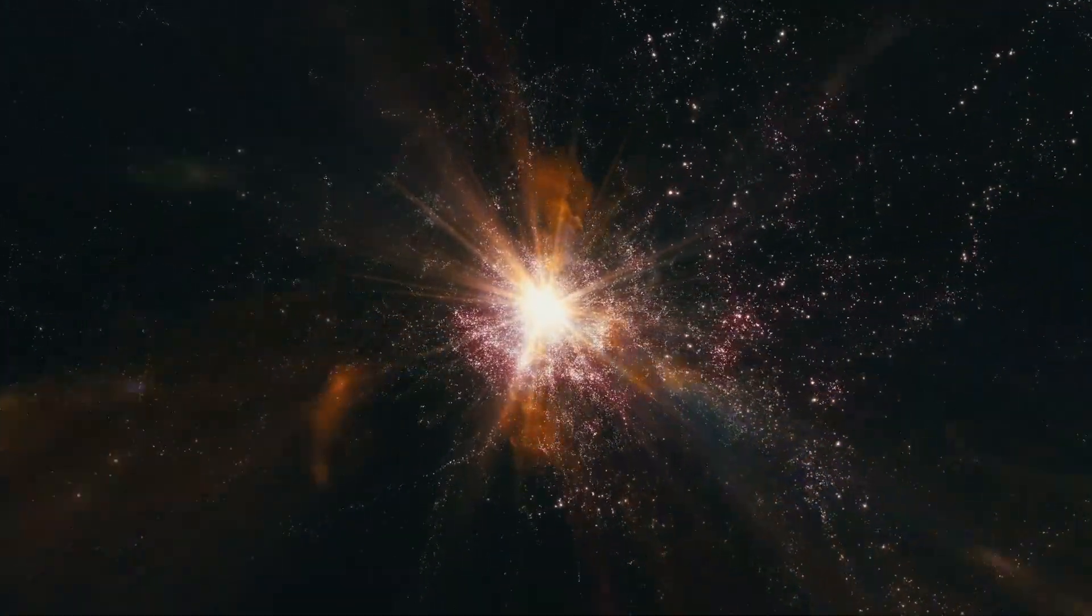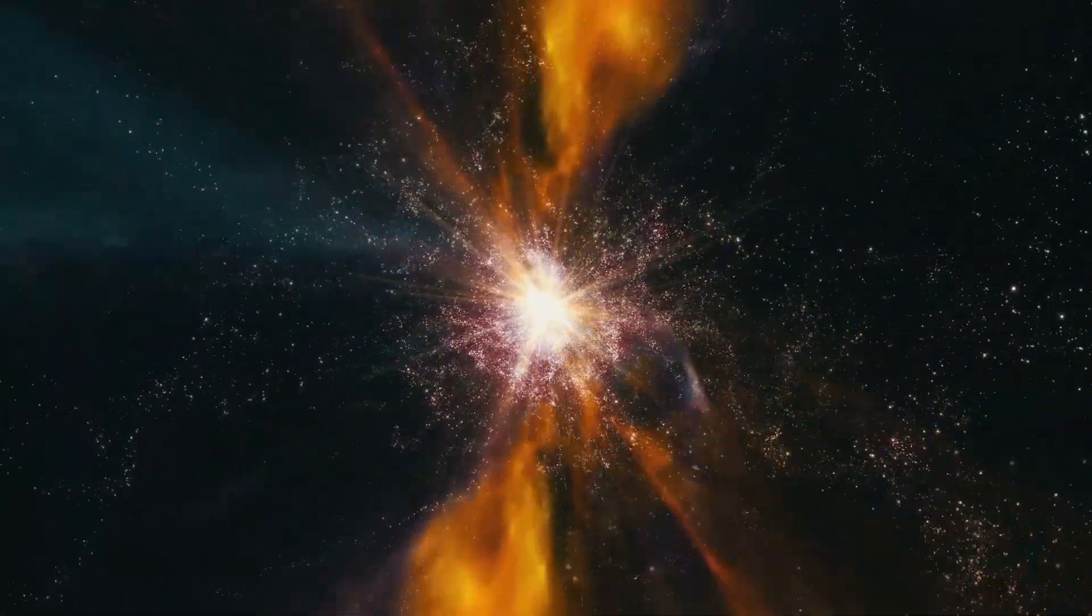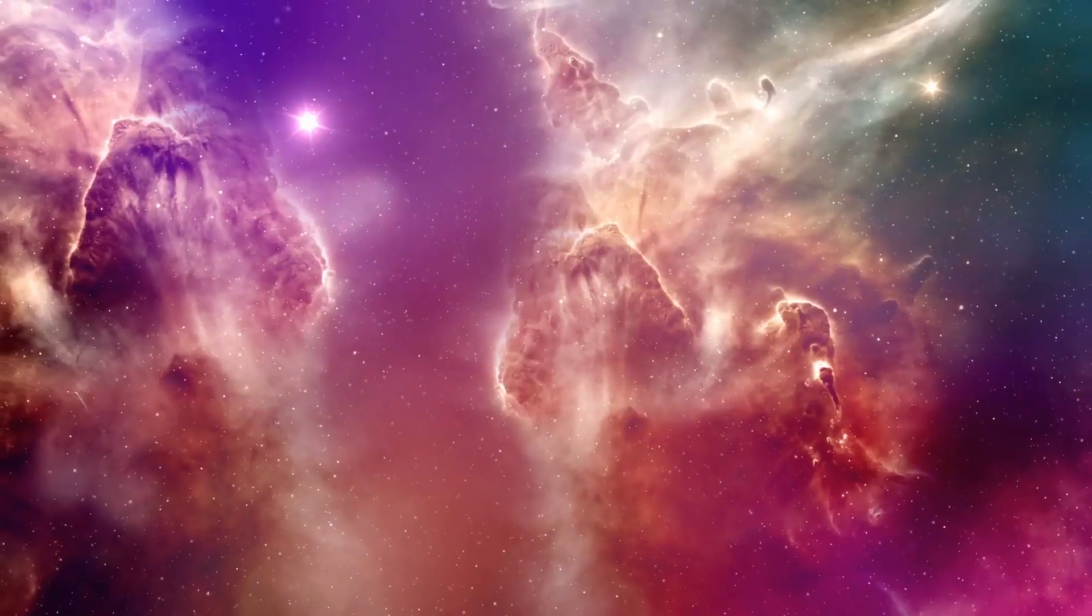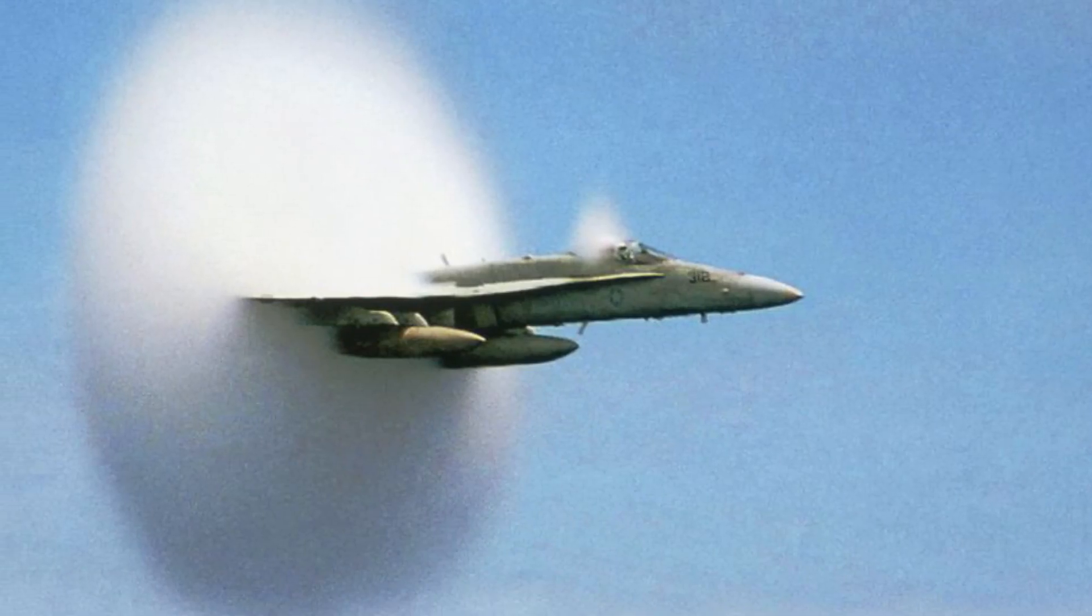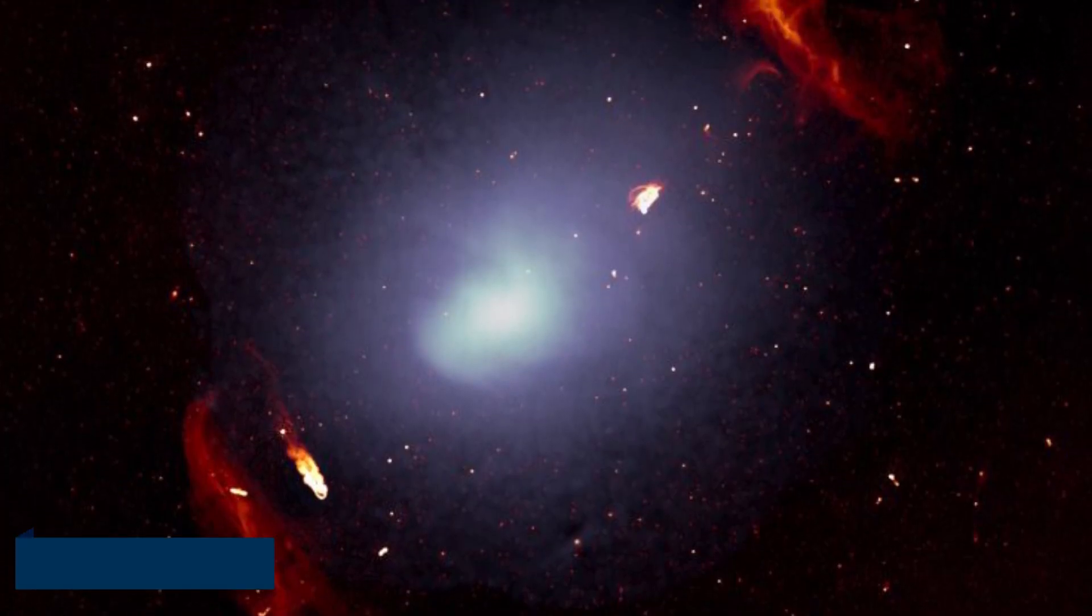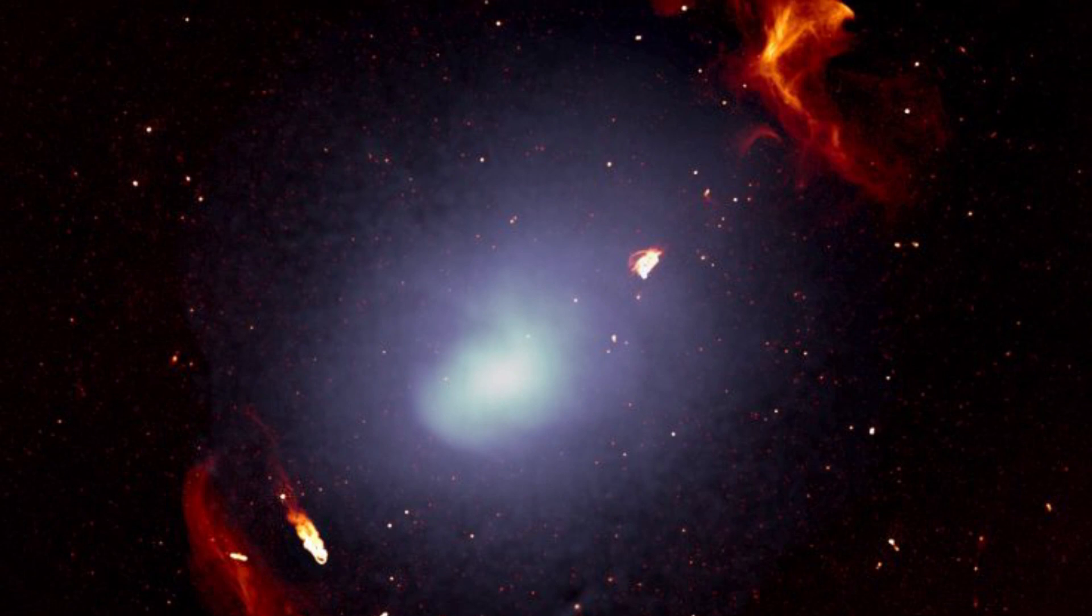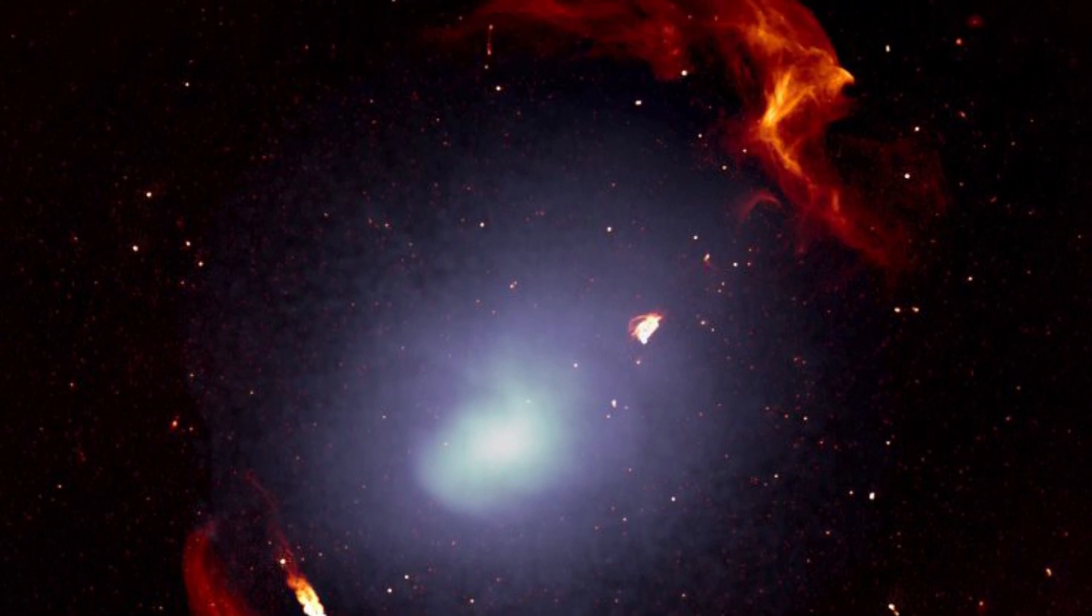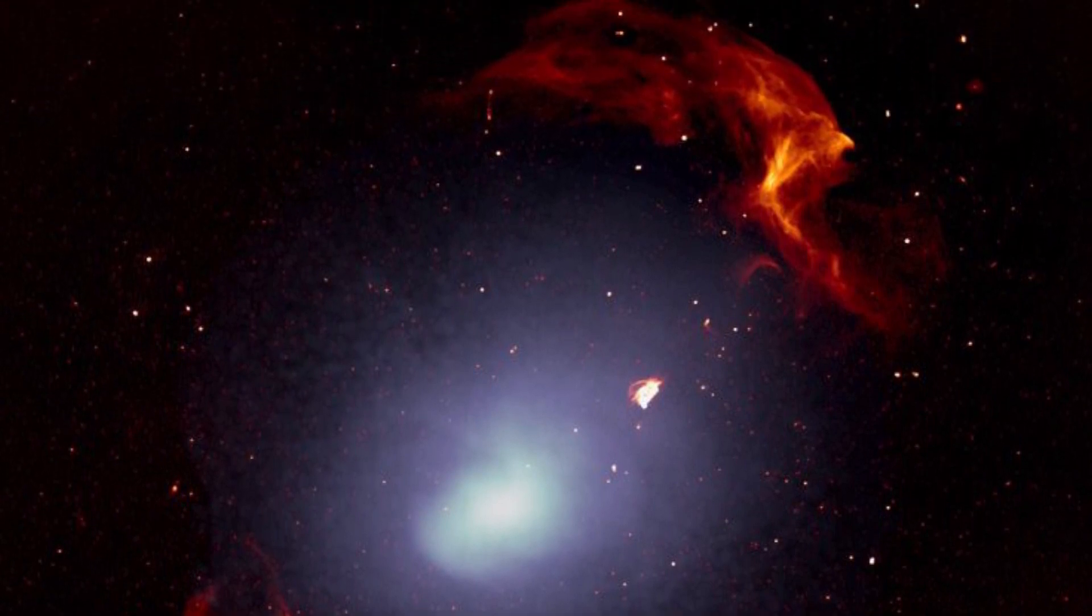When two galaxy clusters collide, we could see the transmission of two massive shockwaves through the newly formed cluster, similar to sonic booms from supersonic airplanes. The galaxy cluster, known as ABEL 3667, was formed more than a billion years ago by the collision of two large galaxy clusters.